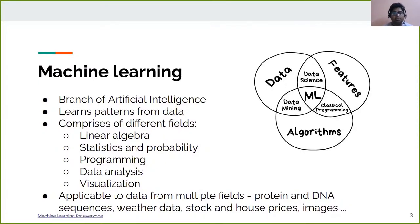Machine learning is a broad field of study and the algorithms it offers can be applicable to datasets from different fields. These datasets may include protein and DNA sequences, weather data, stock and house prices, different images, and biomedical images.